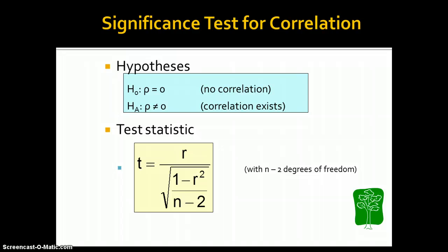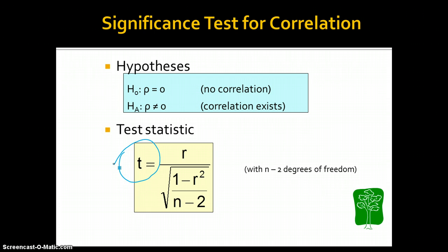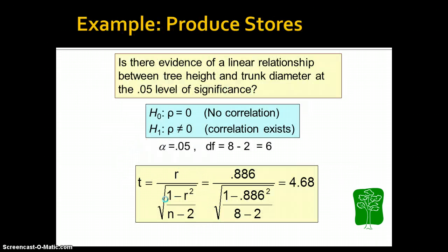Significance testing involves another test statistic that we can calculate using the correlation coefficient and simply n minus 2, which is the degrees of freedom. That gives us a way to calculate the probability of committing a type 1 error — the probability that we are saying there's an association when actually there is none.